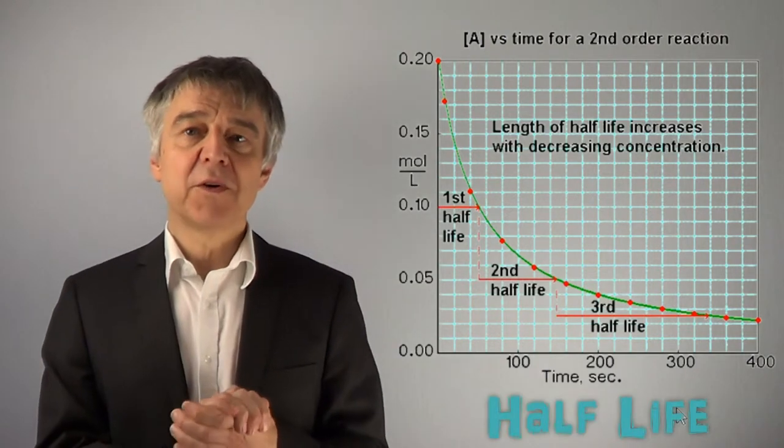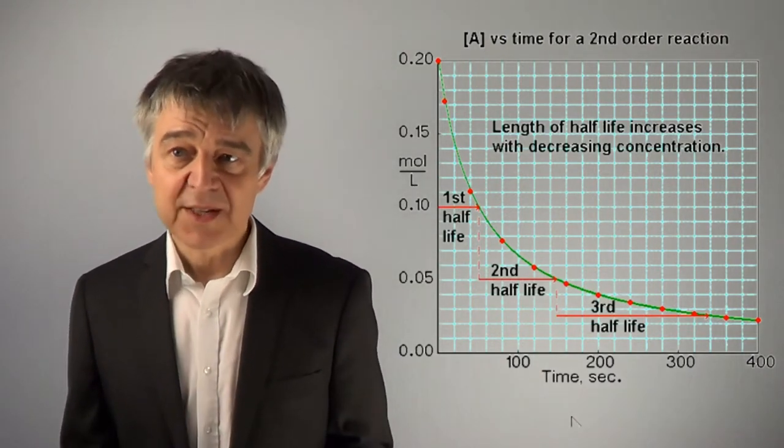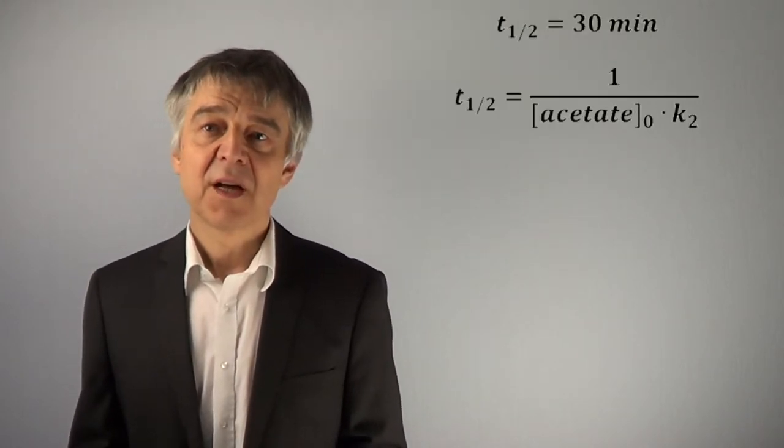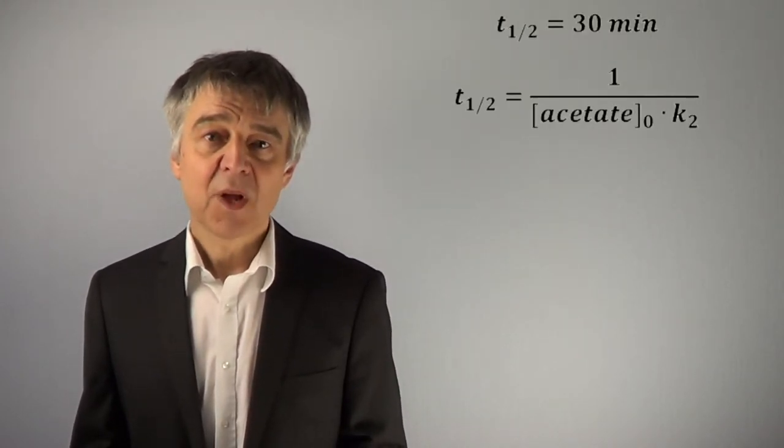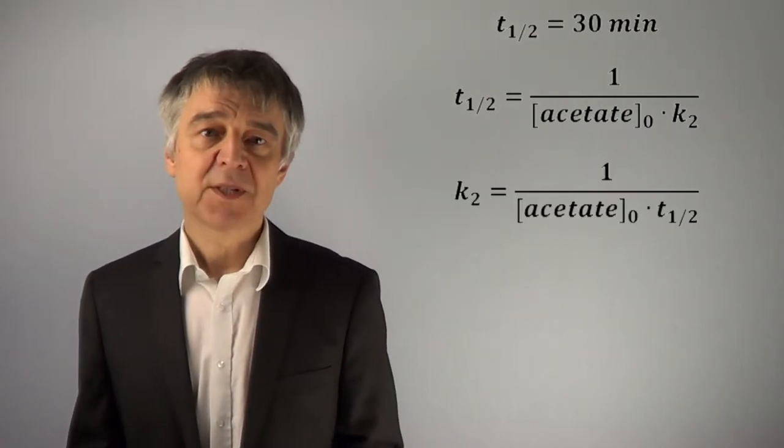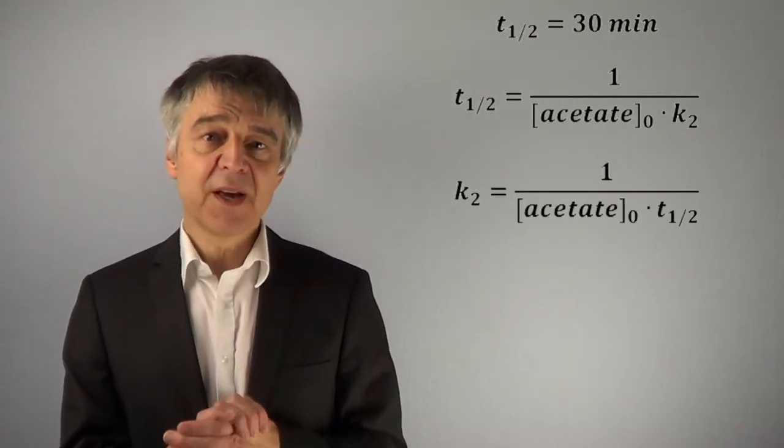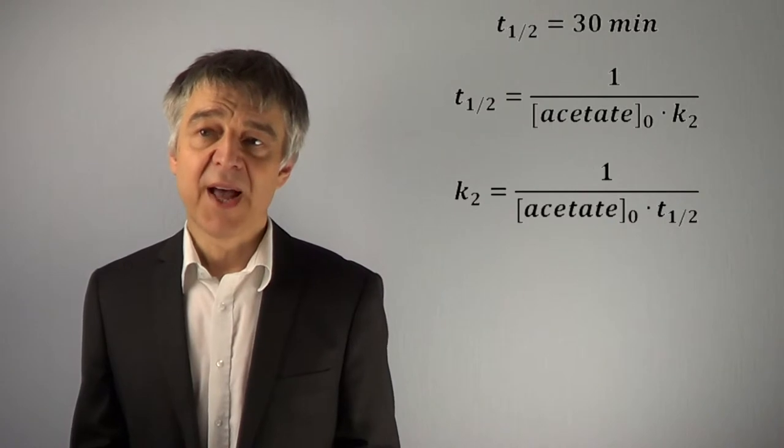First of all, we convert half-life to rate constant. For stoichiometrically run reactions, half-life is simply 1 over acetate concentration times K. Solving for K, we end up with 0.333 liters per mole and minute.